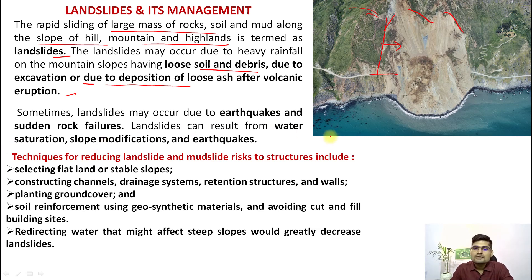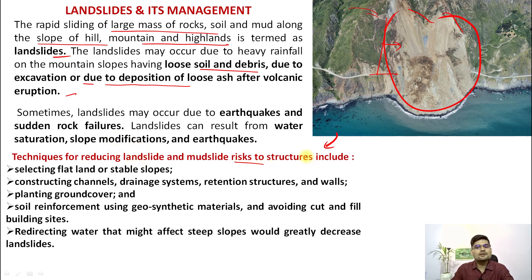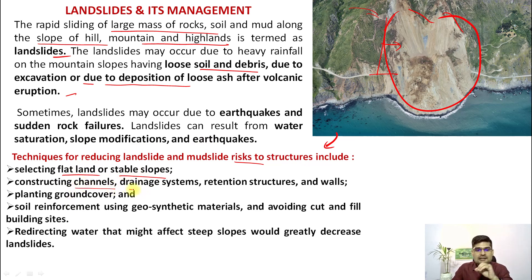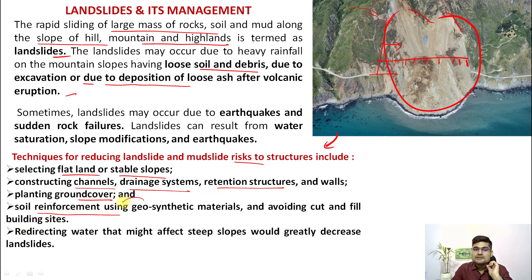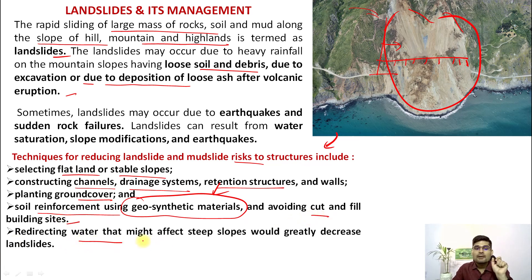Techniques for reducing landslide and mudslide risk involve creating certain structures and stabilizing the slope. This includes selecting flat land or stable slopes, constructing channels and drainage systems, retention structures and walls. Many places have walls being created to protect roads. Planting ground cover is also important, as is soil reinforcement using geosynthetic materials — being done in many parts of the Himalayan region — and avoiding cut-and-fill building sites. Redirecting water that might affect steep slopes would greatly decrease landslides.